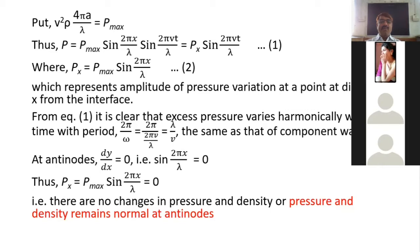Now let us test the excess pressure at antinodes and nodes. At antinodes, the volumetric strain dy/dx equals zero, and for the open-end pipe this corresponds to sin(2πx/λ) = 0. Substituting into the expression for p_x, we get p_x = p_max × 0 = 0. So excess pressure is zero — pressure and density remain constant at their normal values at antinodes.